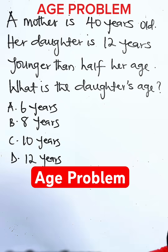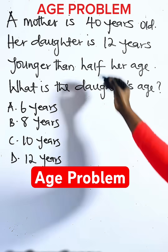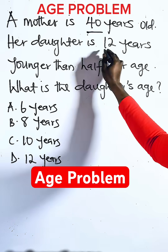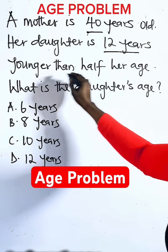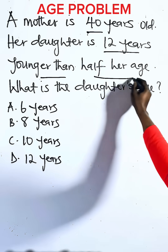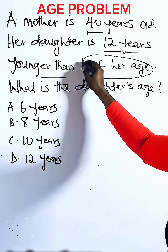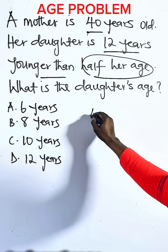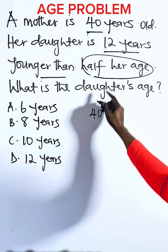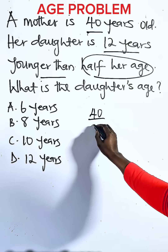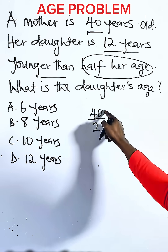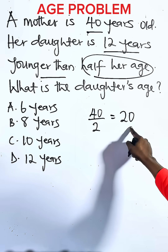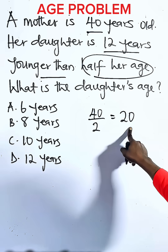We are told the mother's age is 40. The daughter is 12 years younger than half of the mother's age. Half of 40 is 40 divided by 2, which equals 20.